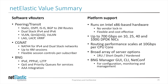So in summary, Netelastic makes software virtual routers. They can be used for peering or transit, for CGNAT, or as broadband network gateways. We run on Intel x86-based hardware, so there's no vendor lock-in, and we're flexible and cost-effective. We run up to 700 gigabits per second on 10, 25, 40, and 100 gig NIC cards. We have routing performance that scales at 10 gigabits per second per CPU core, so depending upon the CPU you use, you can get as much performance as the Intel platform offers.